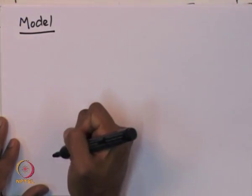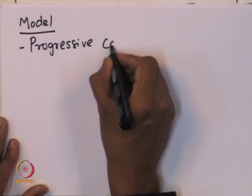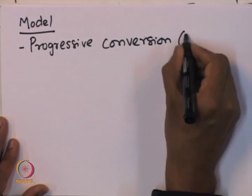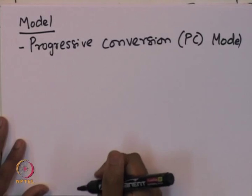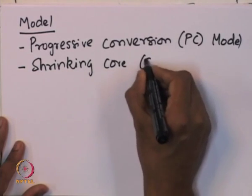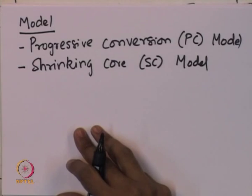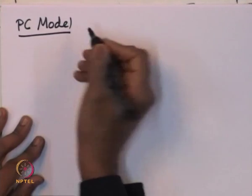Now let us attempt to model the fluid-solid heterogeneous reaction. There are two types of models that have been proposed. The first model is called the Progressive Conversion (PC) model. The second is the shrinking core model, which is much more well-known and more applicable to many systems.